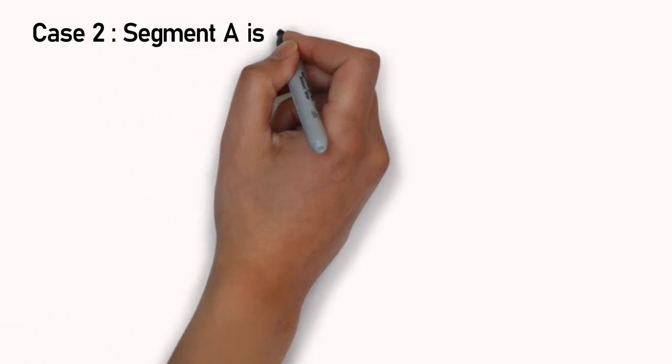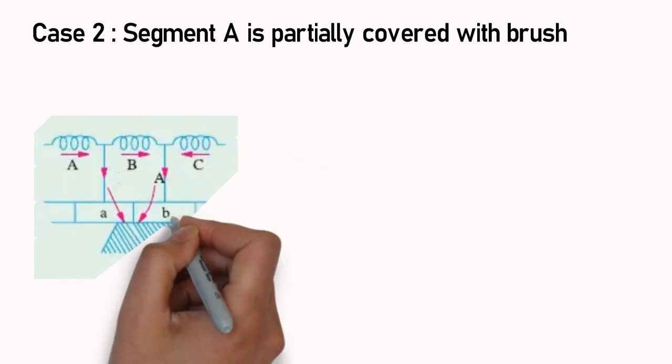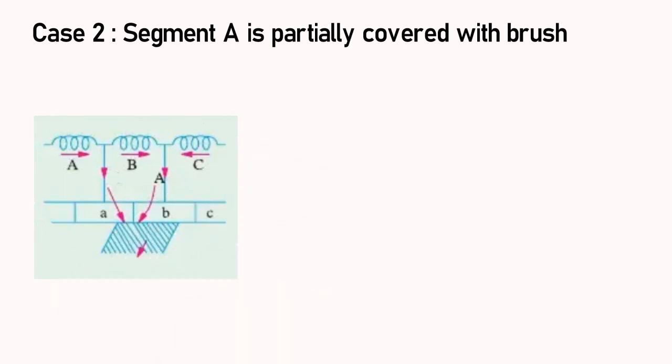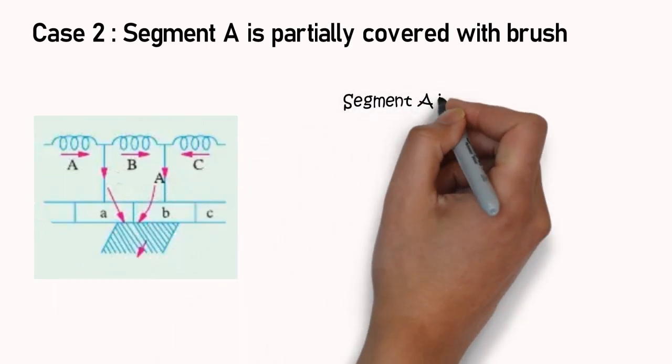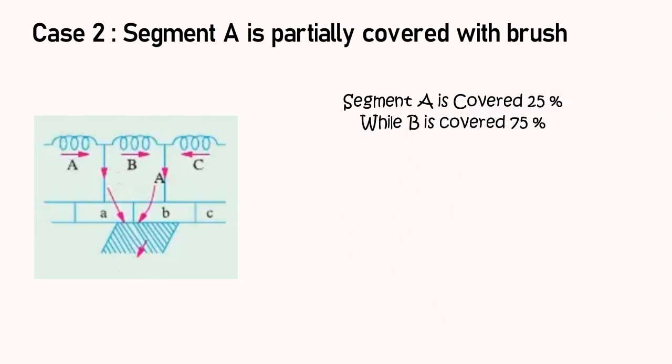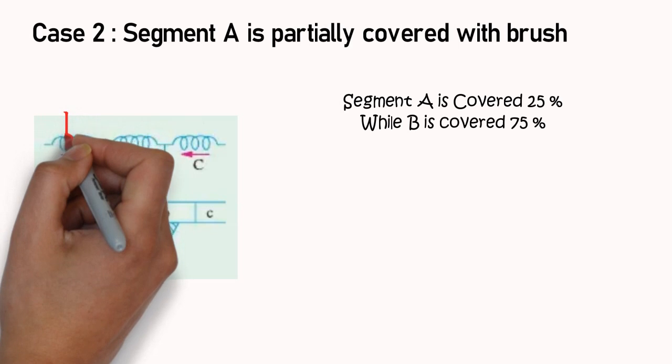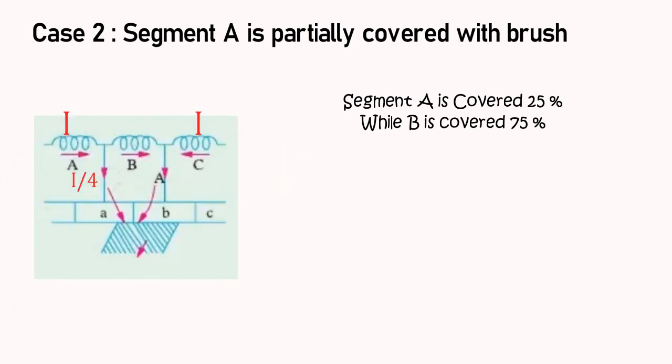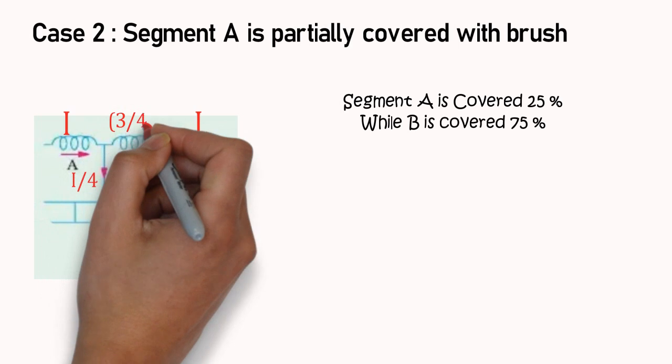In this case, commutator segment A is covered 25%. Hence, 1/4th amount of current will pass through segment A. Here, from coil A and coil C, same amount of current I is flowing. As 1/4th of current is passing downward, remaining current will pass through coil B.